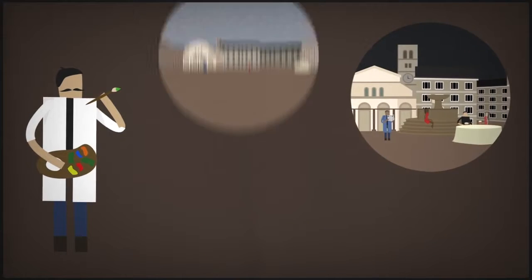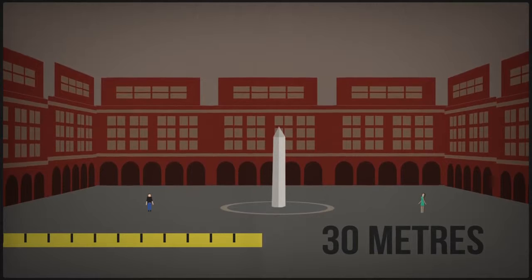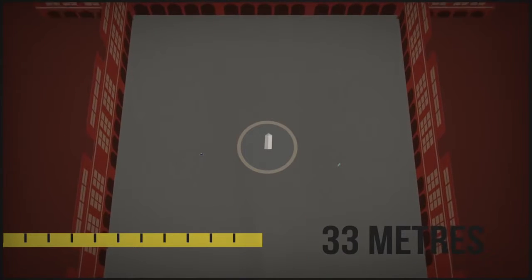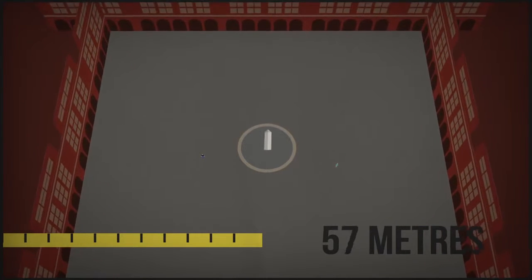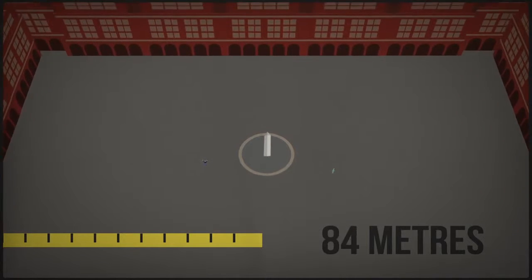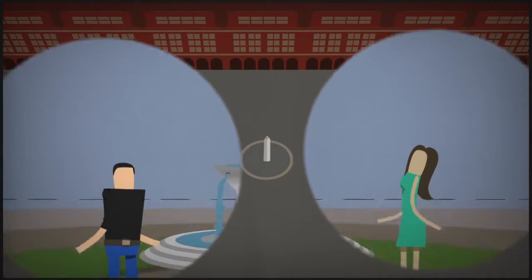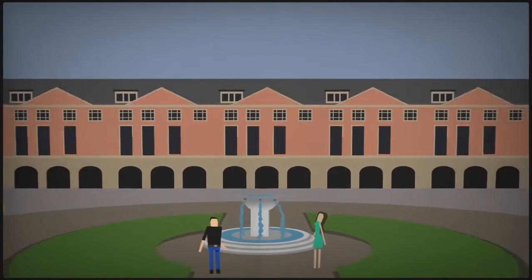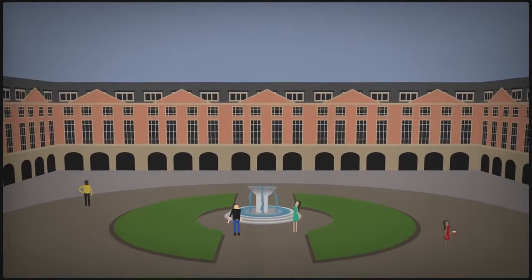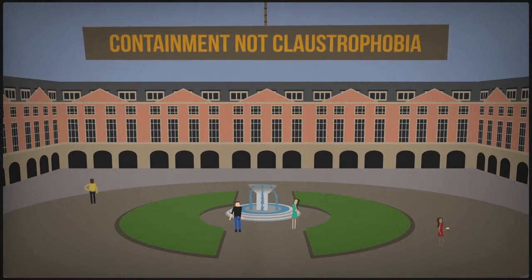There's an art to a good square. It should be neither too big nor too small. Anything over 30 meters in diameter starts to become too large. By which we mean the individual becomes overly small relative to the space around them, creating a sense of alienation and dislocation. In a good square, you should be able to see the face of a person across the square. You could, if need be, hail someone walking on the other side. The ideal square must offer a feeling of containment, but not claustrophobia.